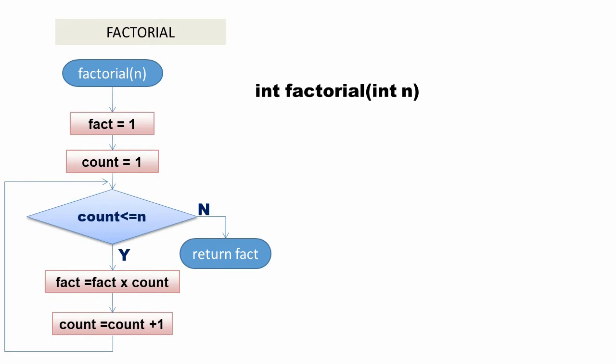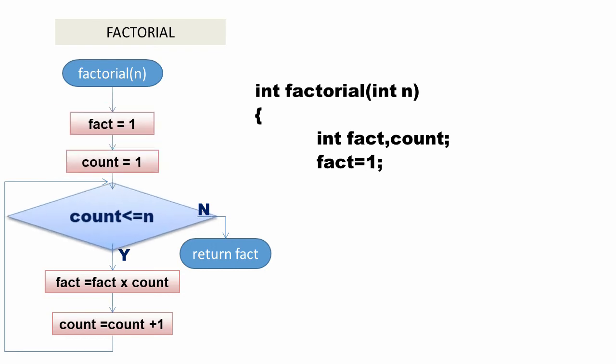Declare variable fact and count: int fact, count. Initialize fact: fact = 1, initialize count. For the loop, we shall use for loop here: for(count = 1; count <= n; count++).